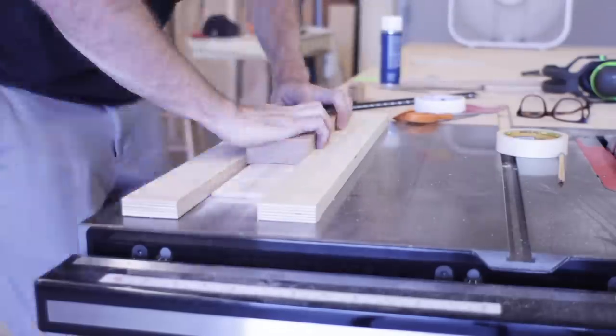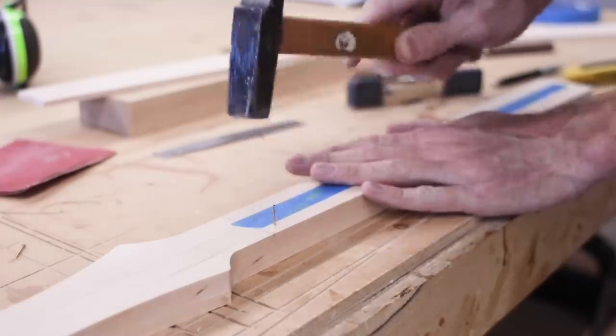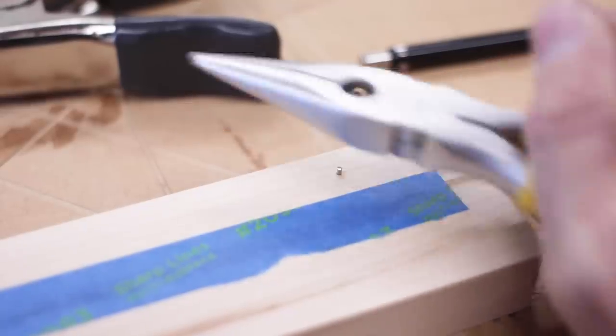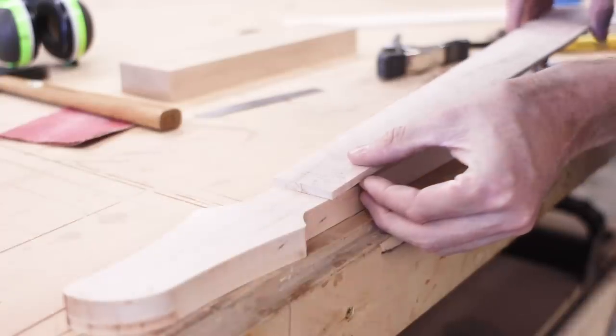With the fretboard radiused, I could finally glue it to the neck. The fretboard needs to be glued to the neck extremely accurately, so that all of the frets are perpendicular to the center line, and so that the nut lines up with where we had it marked originally.